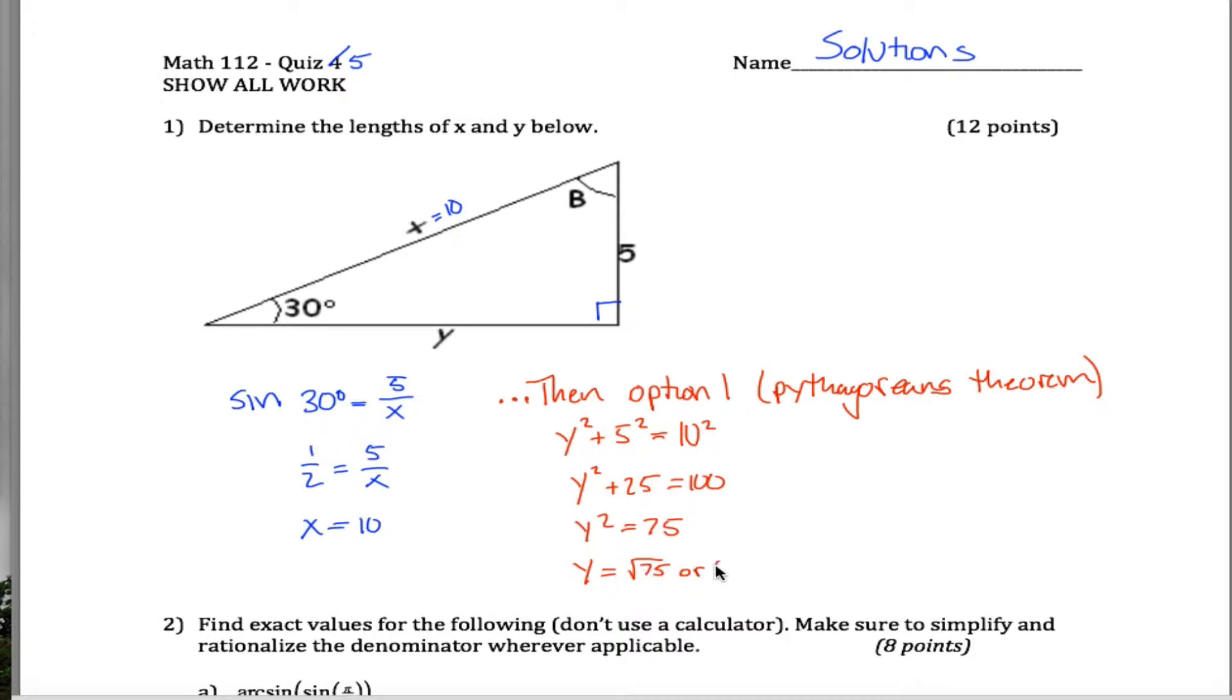Which, by the way, is 5 times the square root of 3, because 75 can be written as 25 times 3, and the square root of 25 is just 5.